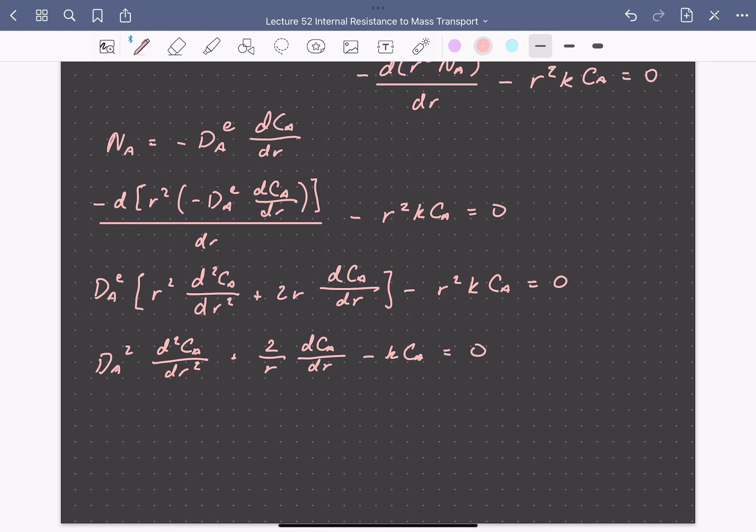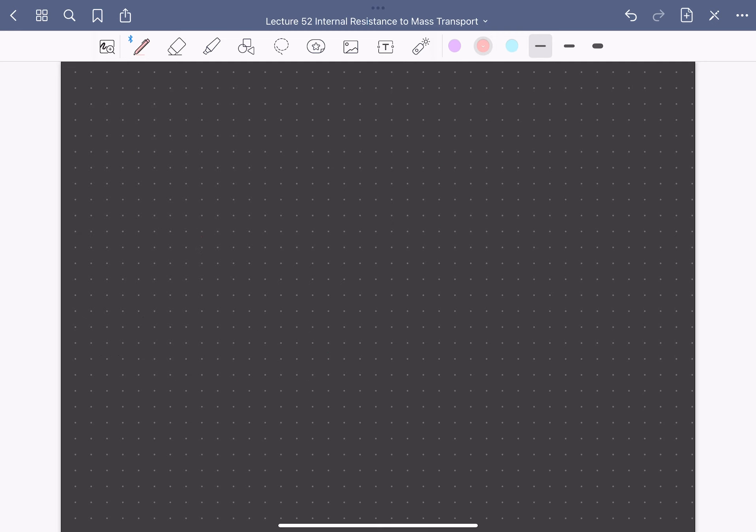So this differential equation can be non-dimensionalized using the following parameters. So we can define ψ as the concentration of A at any position R divided by the concentration of A at the surface. And we can have a similar non-dimensional variable for position here. So we can define ω as the position R divided by the radius of the particle. This gives us a differential equation that looks like this. So d²ψ/dω² plus 2 over ω·dψ/dω minus the radius of the particle squared times the rate constant K divided by the effective diffusivity squared times ψ equals zero.